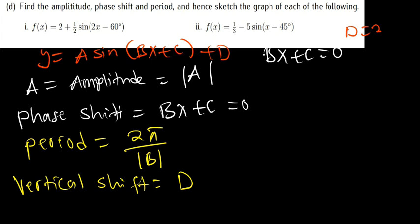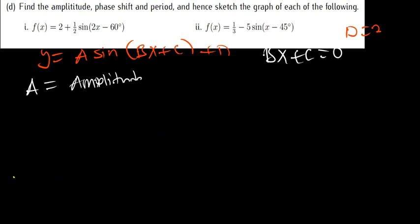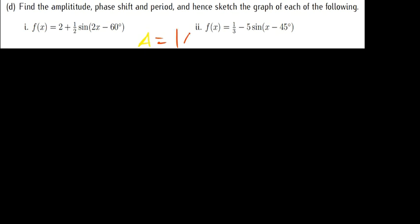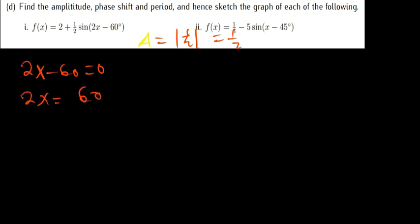For example, the question we have here: sketch f(x) = 2 + ½·sin(2x + 60°). Find the amplitude, phase shift, the period, and hence sketch the graph. To find the amplitude, the amplitude is the modulus of a, so in this case the modulus of ½, which is just ½. For the phase shift, equate what is in the brackets to zero: 2x + 60 = 0, so 2x = −60, divide by 2, x = −30 degrees.